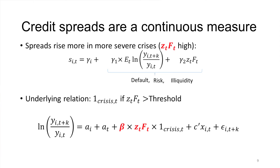Credit spreads are useful because they are a continuous measure of the severity of a financial crisis. The literature has used a 0-1 classification. We have credit spreads, which allow us to distinguish among severity. In the 1980s S&L crisis, spreads rose but not much — a mild crisis. In the 1929 Depression, spreads rose a lot — a much more severe crisis. With this information, we can provide a sharper statement about the aftermath, because we can more precisely define which crises are relevant for thinking about 2008.